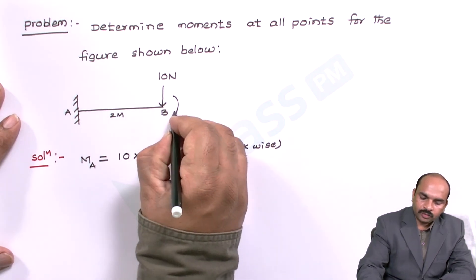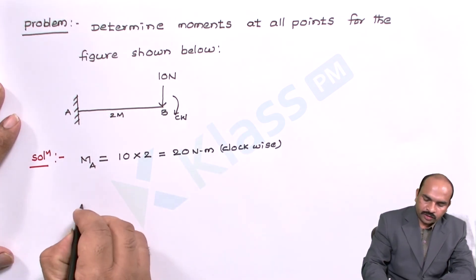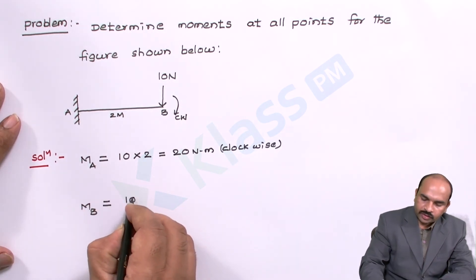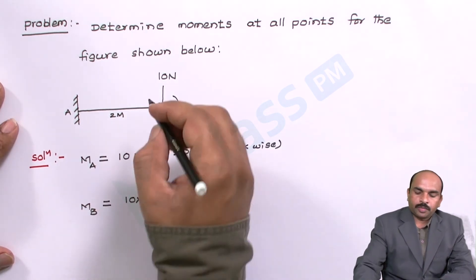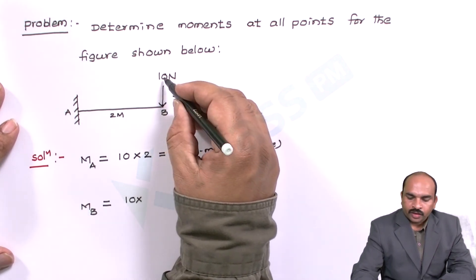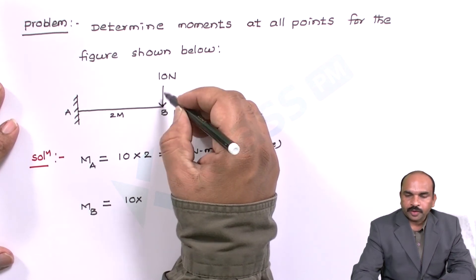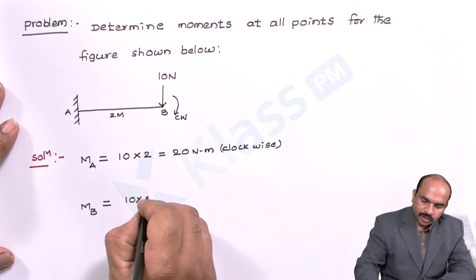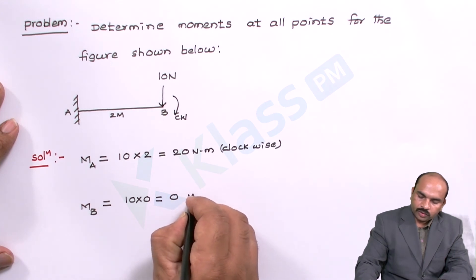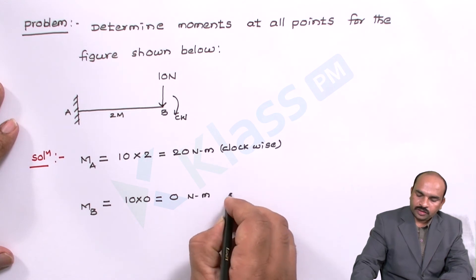It is a clockwise moment. Similarly, at point B, the force is 10 Newtons but the perpendicular distance of this force from B is 0, because the force acts at point B — both are in the same line, so their perpendicular distance is 0. Therefore, the total moment at B will be 0 Newton meters.